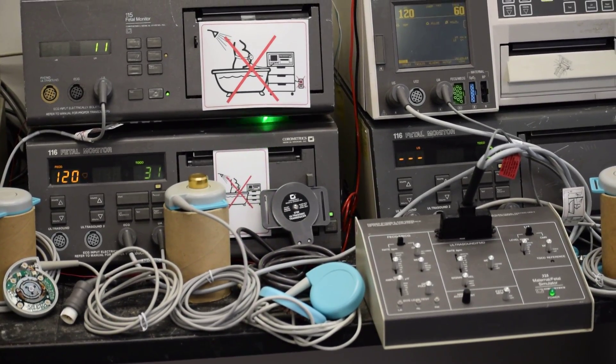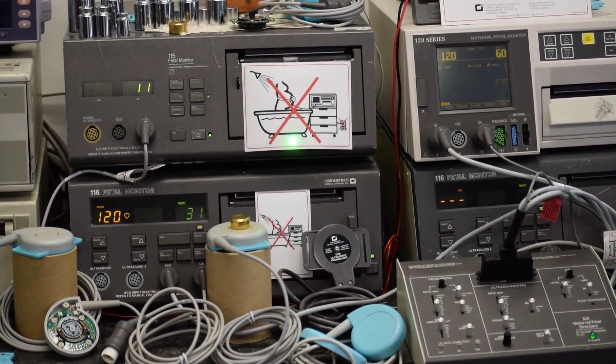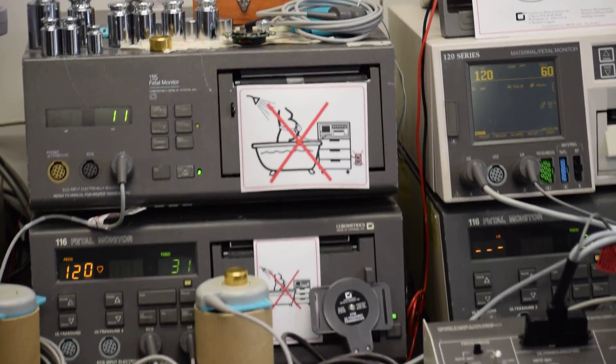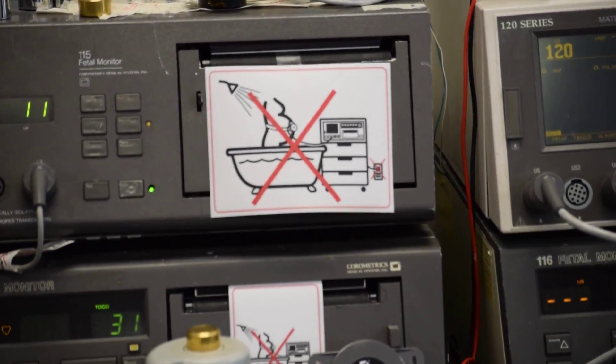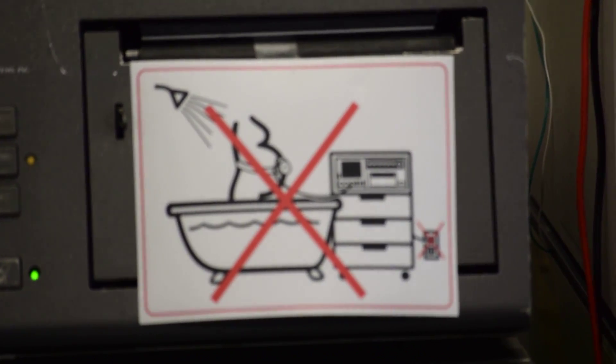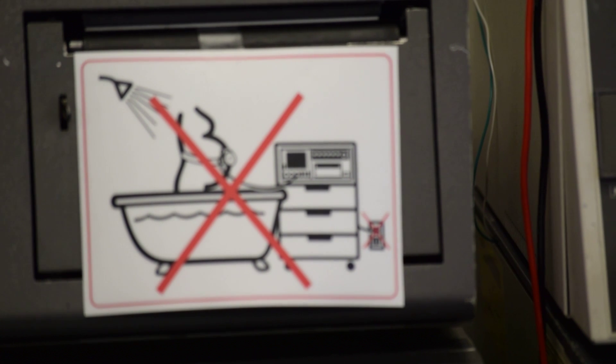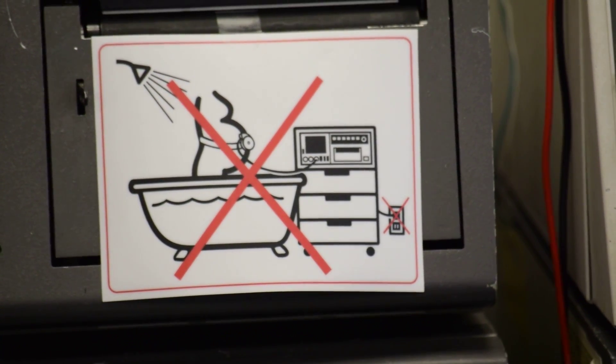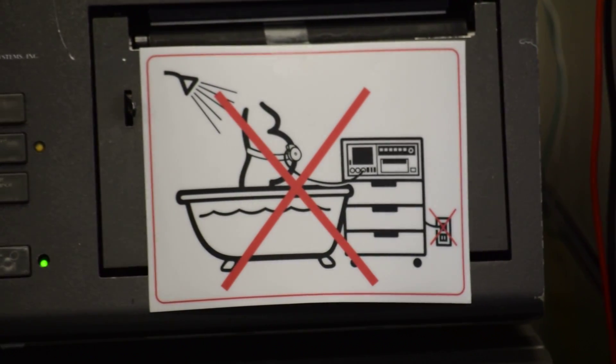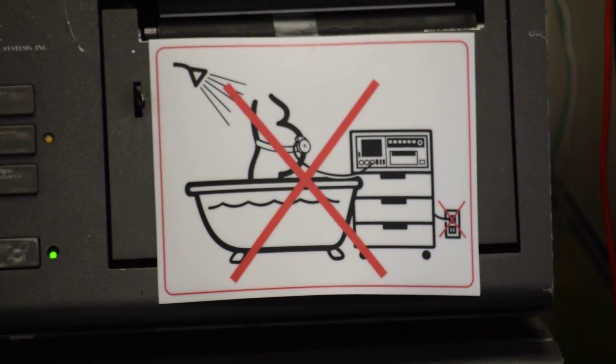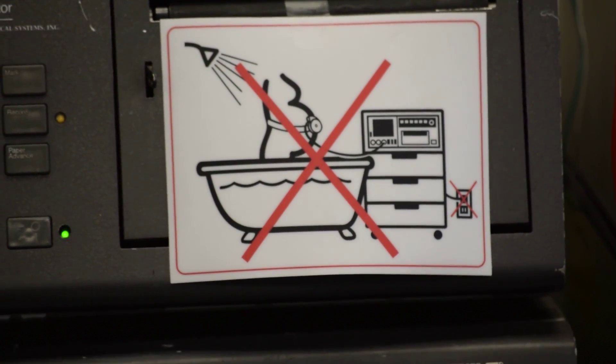What you see in the center is a label. These labels are supplied by GE Corometrics along with fetal monitors and whenever you buy new transducers. The label clearly depicts that expectant mom cannot go into a shower or in a tub and have connected with the transducers to fetal monitors.